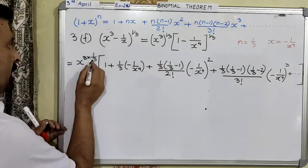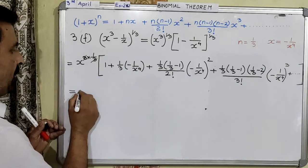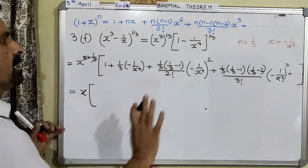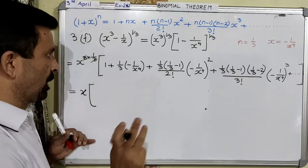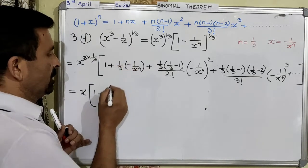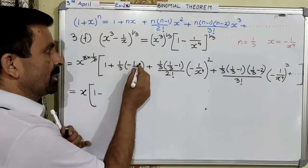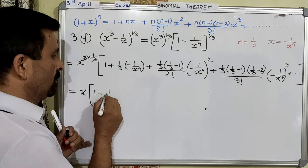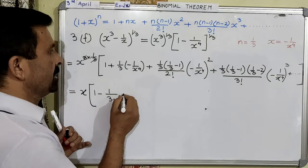Now here, this 3 and this 3 cancel, so in the next step finally I have only x. Now expansion is done — expansion you will have only in one step. The remaining steps we have to do only the simplification part. So: this is 1 as such, minus — multiply the two fraction numbers: numerator multiplied by numerator and denominator multiplied by denominator — so this is 1 over 3x to the power 4.